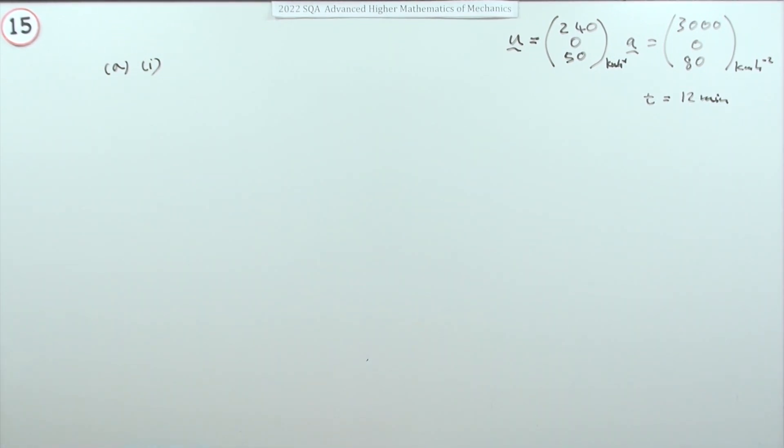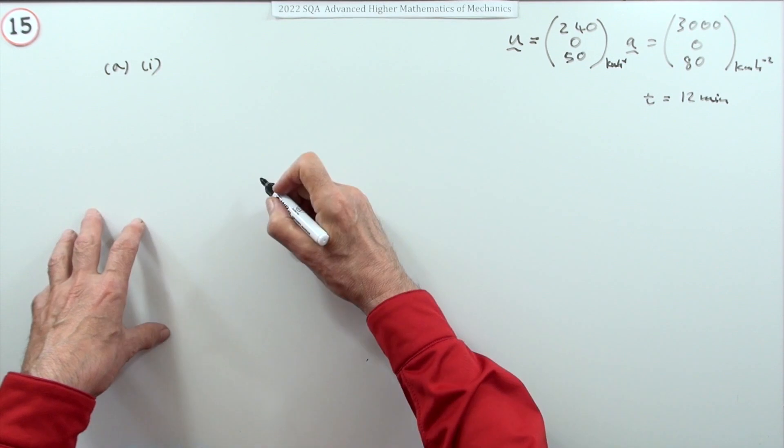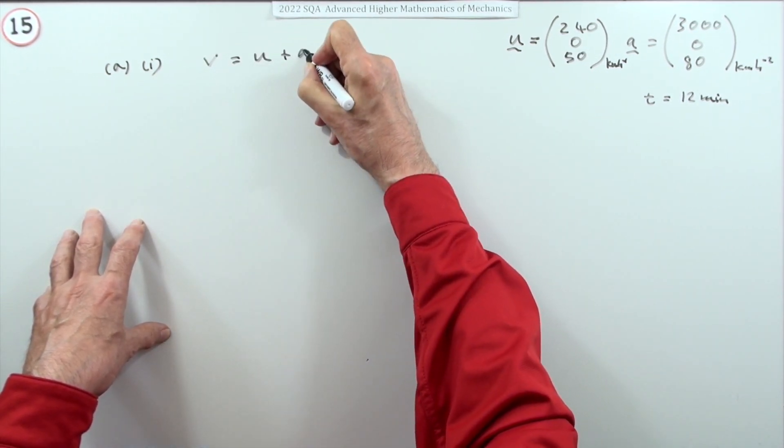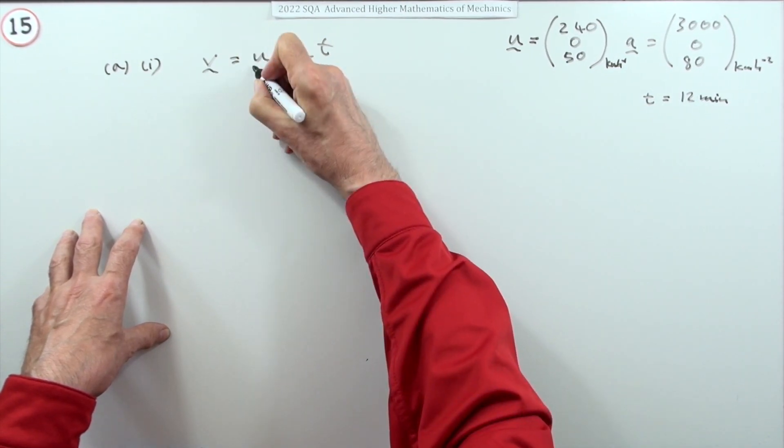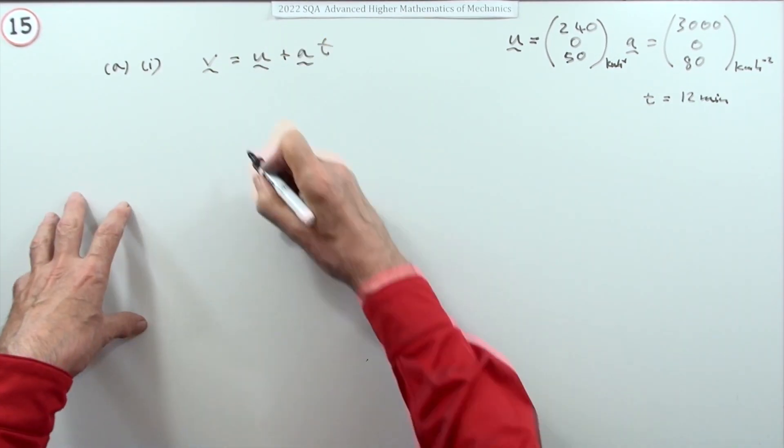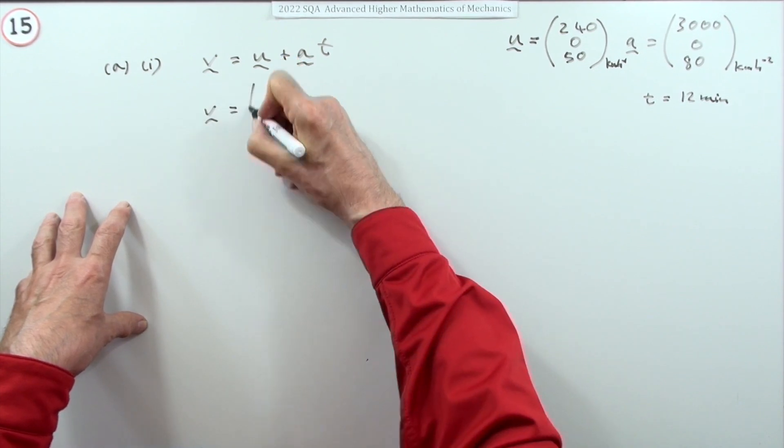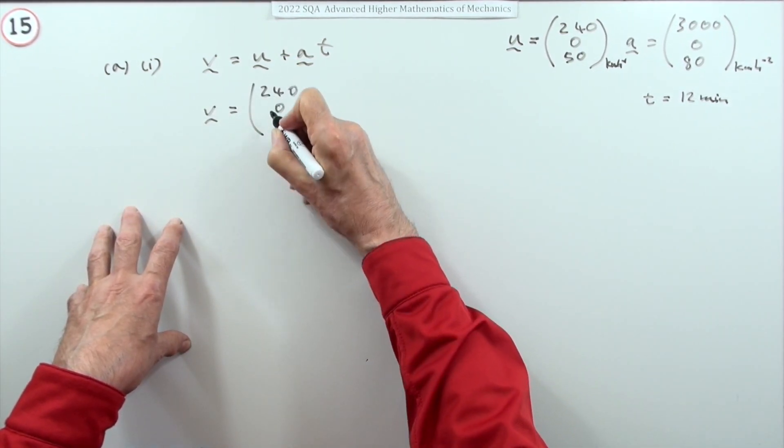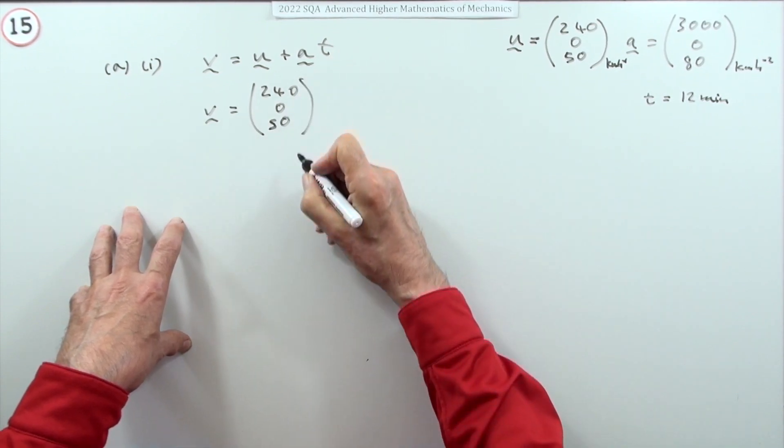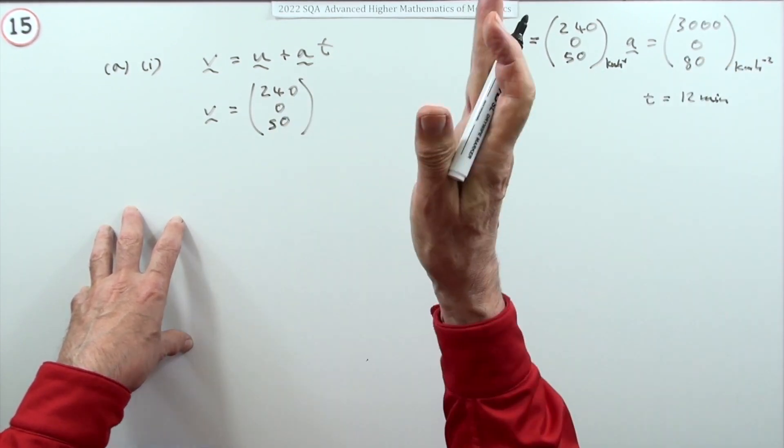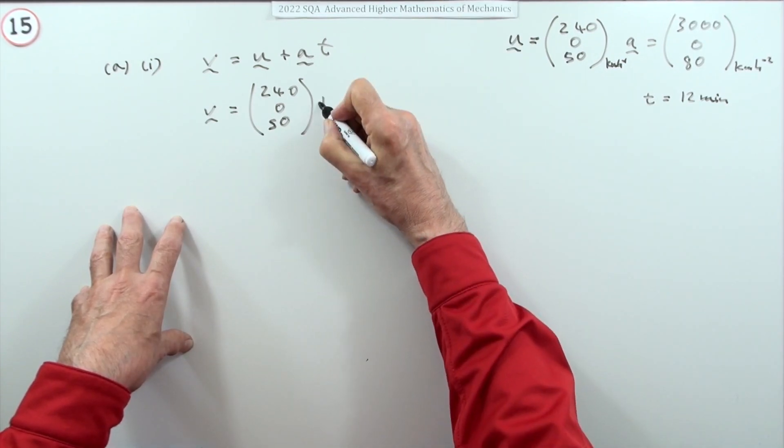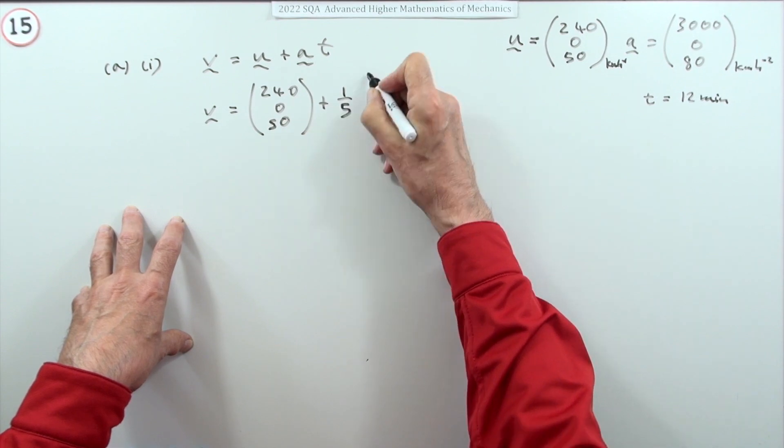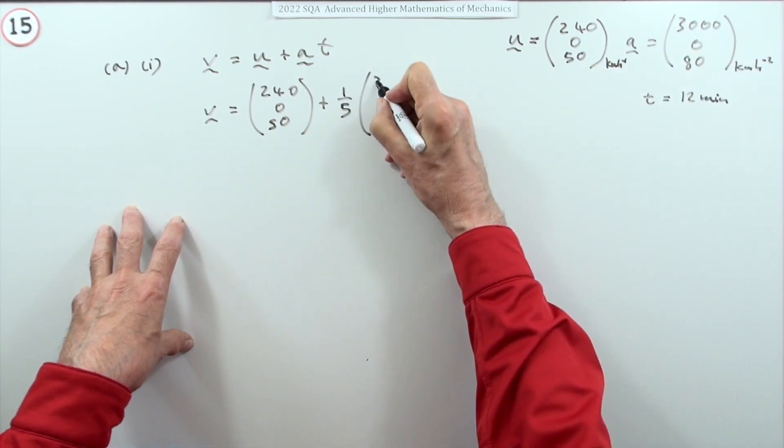Same equations as before: v equals u plus at. The only difference here is they're now vectors. So v would be the initial velocity vector (240, 0, 50) plus t times... now 12 minutes is a fifth of an hour, times the acceleration vector (3000, 0, 80).